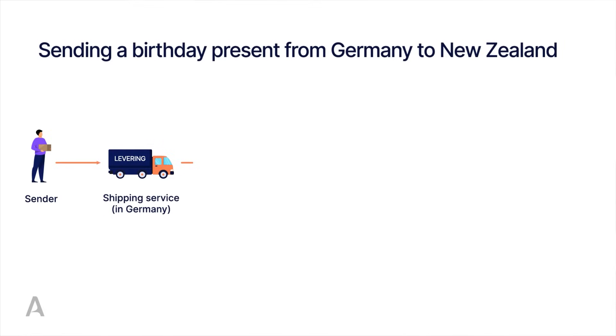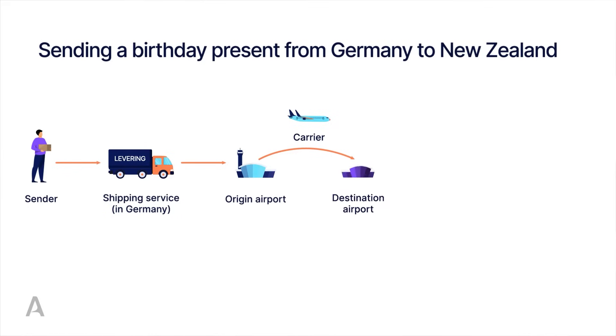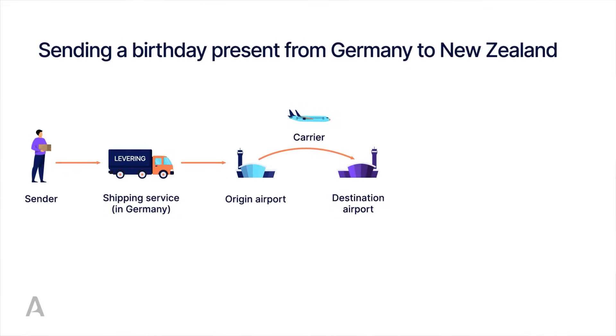They check the packaging and perform customs clearance at departure. They then hand this over to an airline. The airline will then transport the shipment to New Zealand. Based on the distance, it's very likely that this consignment would fly via a so-called transit hub — on two or more flights to get to New Zealand from Europe, simply based on the range that aircraft can fly.